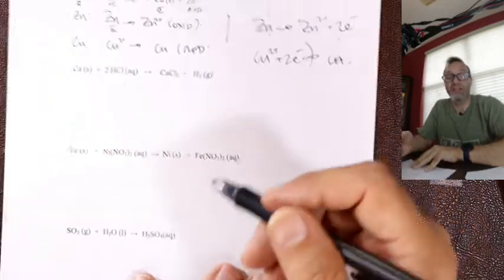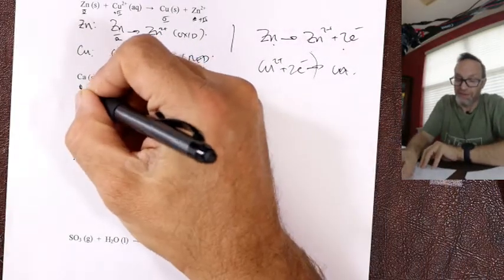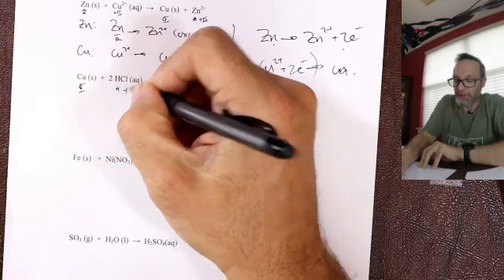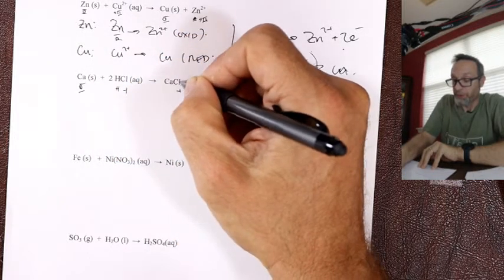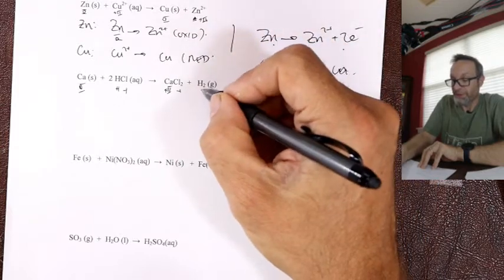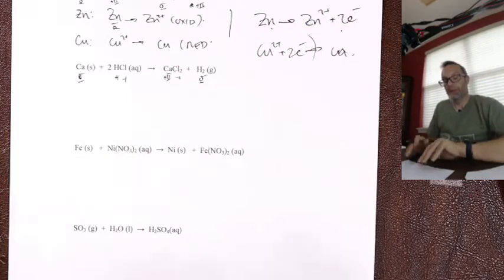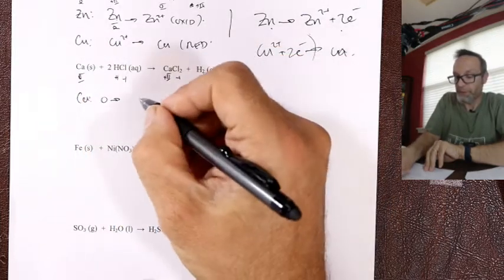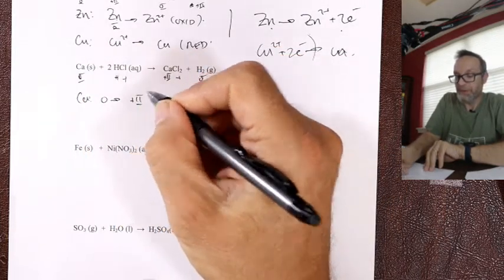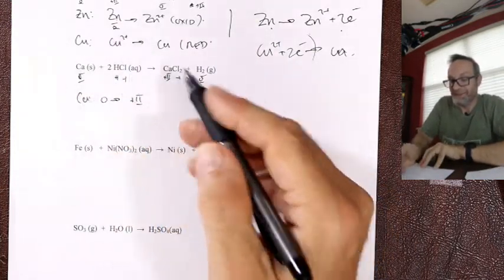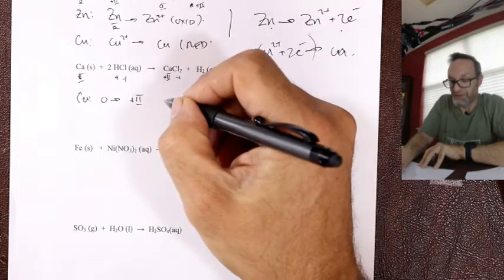Assigning oxidation states for individual atoms in Ca + 2HCl → CaCl₂ + H₂: calcium is zero; HCl has H at plus one and Cl at minus one; CaCl₂ has Cl at minus one, two of them, and calcium at plus two; H₂ is a molecule at zero. Calcium went from zero to plus two — did it gain or lose electrons? It went to plus two so it must have lost — oxidation is loss — calcium was oxidized.